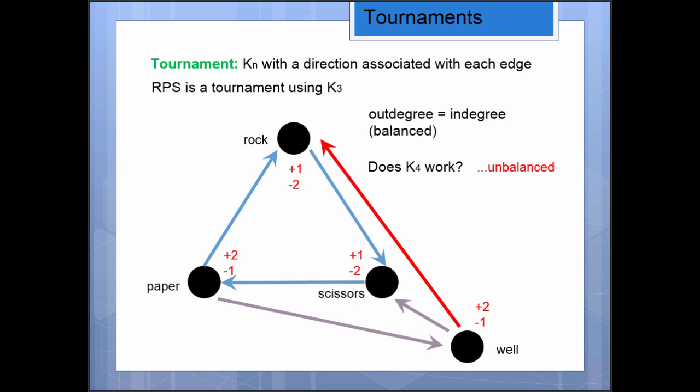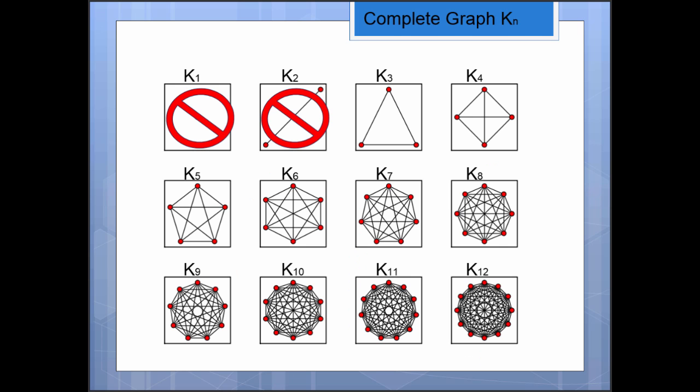Now, I don't really want to worry about this game too much because it's not balanced. I want to try to generalize our original rock, paper, scissors in a way that we have this really nice property of balanced degrees.